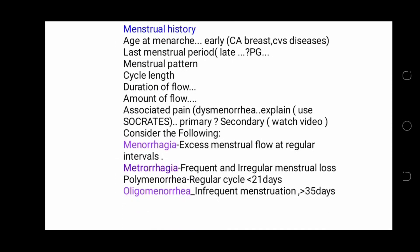Menstrual history is very important in obstetric and gynae history. It is important to elicit the age of menarche — early menarche may be associated with breast cancer and cardiovascular disease. Ask about the last menstrual period, and if it is late, you can perform a pregnancy test. Ask about menstrual pattern: the cycle, duration of flow, amount of flow, associated pain (that is dysmenorrhea), applying SOCRATES as explained earlier, and whether it is primary or secondary dysmenorrhea.